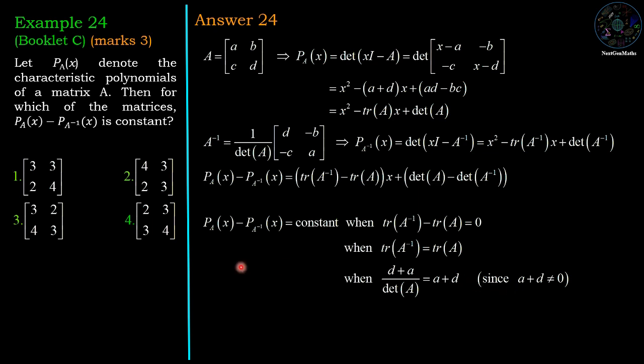Since in our example all the matrices have non-zero trace, therefore we cancel d plus a with d plus a and determinant A is equal to 1. That means the difference is constant when determinant A is 1.